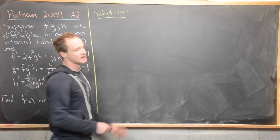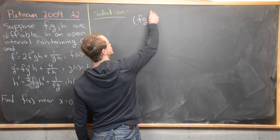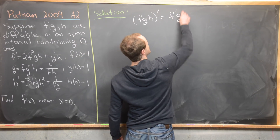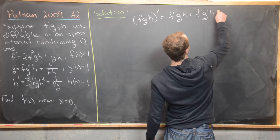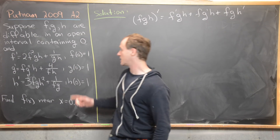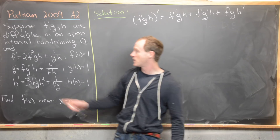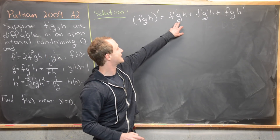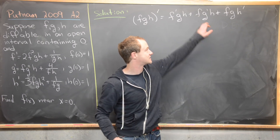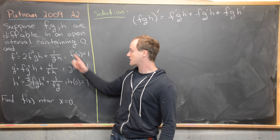We start with the product rule for a product of three functions: the derivative of f times g times h is f prime·gh plus fg prime·h plus fgh prime, which follows by applying the product rule twice. We want to obtain something that looks like this from the system. If we multiply the first equation by gh, the second by fh, and the third by fg, we create each of those three terms and also clear the denominators.